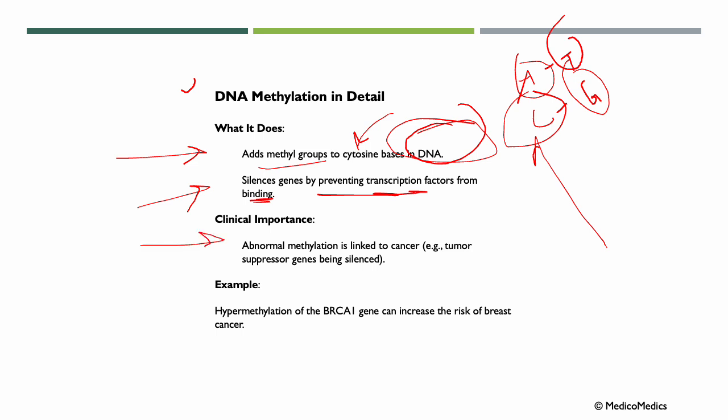Clinical importance. Abnormal methylation is, for example, linked to cancer, like tumor suppressor genes being silenced. An example is hypermethylation of the BRCA1 gene can increase the risk of breast cancer.